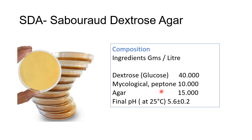In SDA, mycological peptone provides nitrogenous compounds, and dextrose provides the energy source. High dextrose concentration and low pH favor fungal growth and inhibit bacterial contamination. The pH is 5.6, which is slightly acidic, and this favors the growth of fungi and not bacteria.